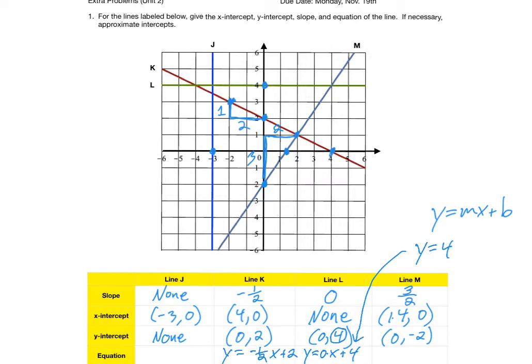Line M, you've got Y equals M is a slope of 3 halves times X plus, in this case, B is the negative 2, so this is minus 2. The equation of line M is Y equals 3 halves X minus 2.